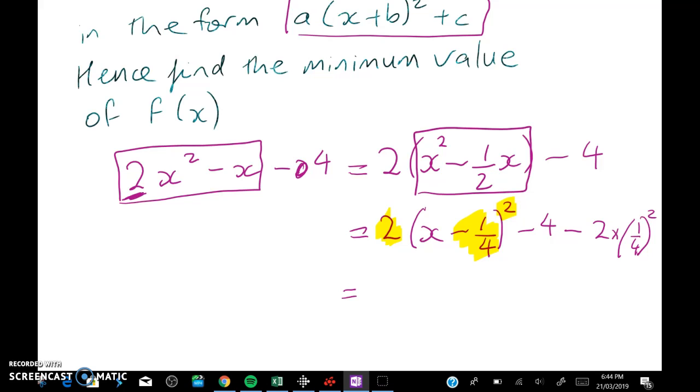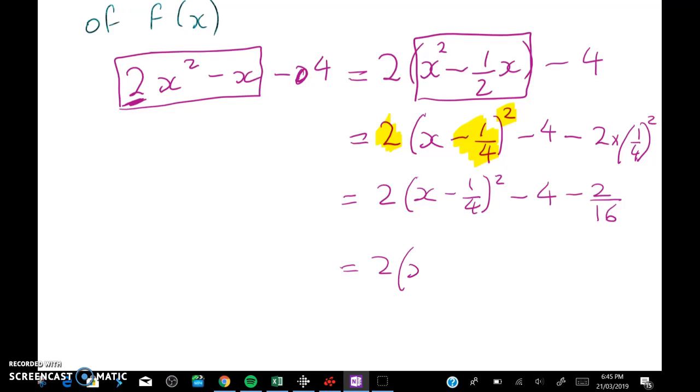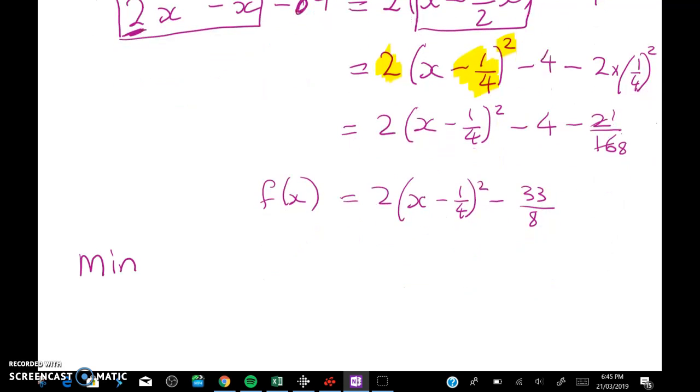So now I have to subtract two times one quarter squared. Right I'm going to finish this off and then I'm going to go through this step a little bit more slowly. So what does that give me? Well it gives me two times x minus a quarter squared minus four minus two sixteenths. Which equals two times x minus a quarter squared minus, well this is one eighth here, this little fraction here, minus 33 over eight. Now let's take a look at what we've got. We've rewritten f(x) like this. So where is it going to have a minimum value? Well this thing here is a squared number. So the lowest value it can ever be is zero. And that will happen when x is equal to one quarter.